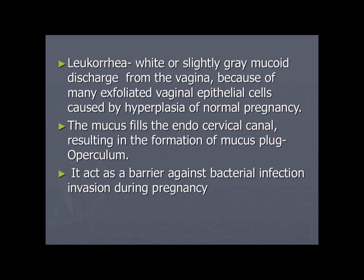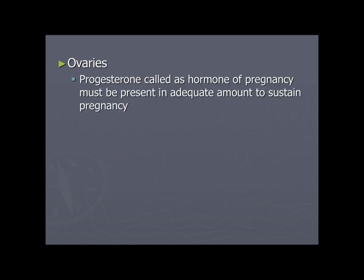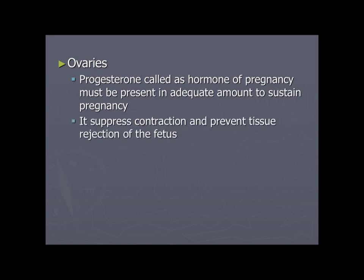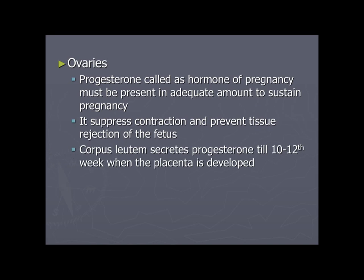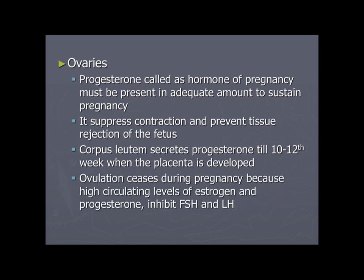Progesterone is known as the hormone of pregnancy and must be present in adequate amounts to sustain it. Many changes in the maternal body are due to progesterone and estrogen. Progesterone suppresses contractions and prevents tissue rejection of the fetus. The corpus luteum secretes progesterone until 10–12 weeks until the placenta is fully developed. Ovulation ceases during pregnancy because high circulating estrogen and progesterone inhibit FSH and LH.